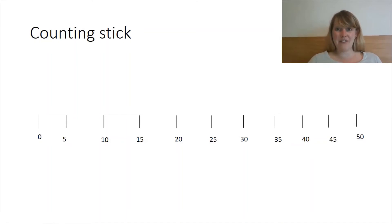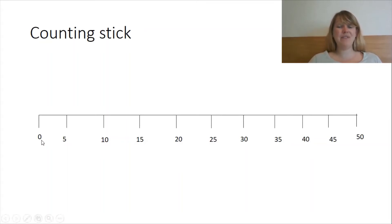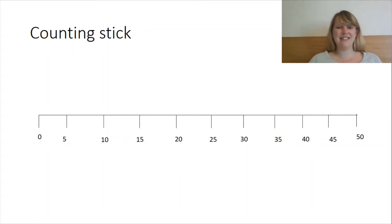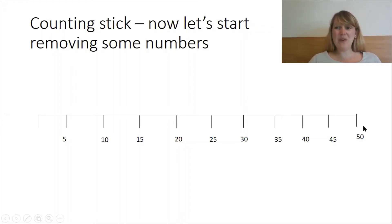And back again — 50, 45, 40, 35, 30, 25, 20, 15, 10, 5, 0. Well done. So we don't need 0, let's wave bye-bye to 0. Bye. And also we know what goes on at this end — 50. So let's wave bye-bye to 50.